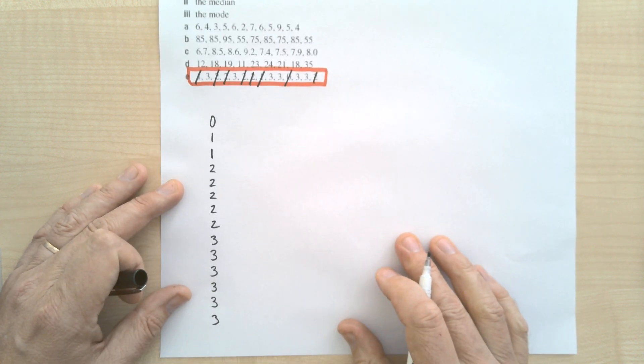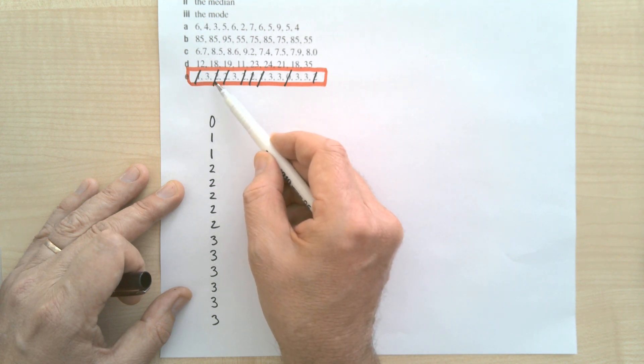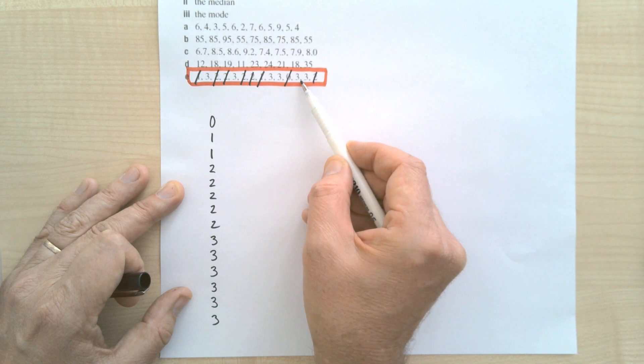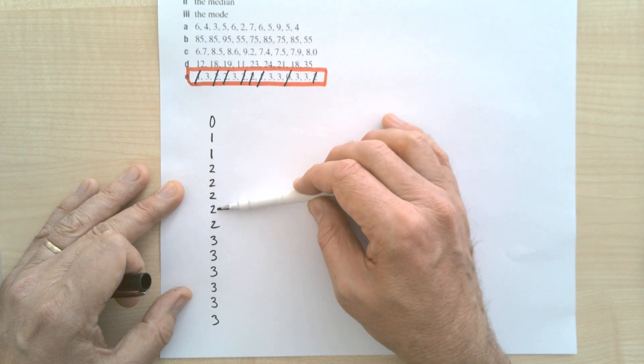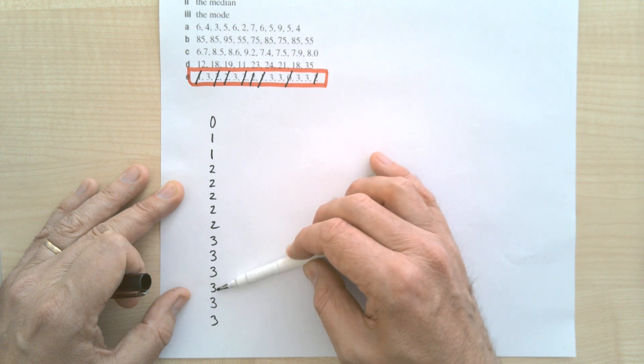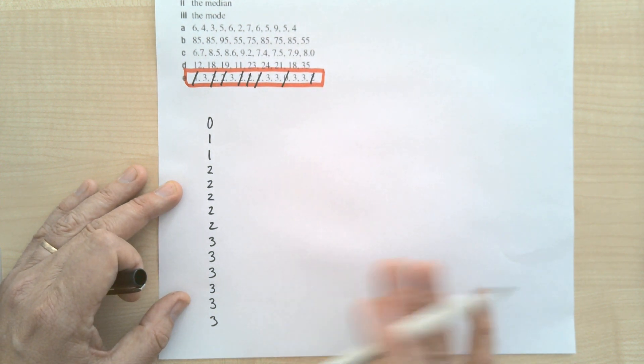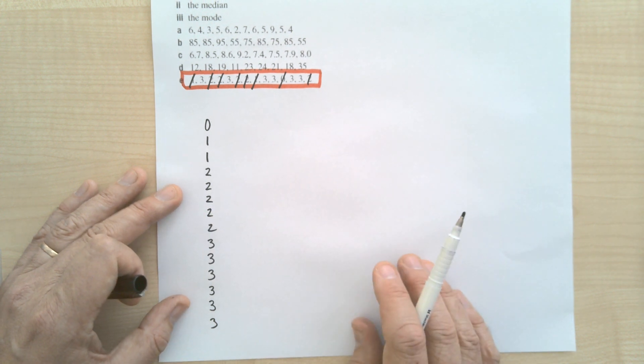Alright, so that's the data written from smallest to biggest. Let's just check for a second. I've got one, two, three, four, five, six, seven, eight, nine, ten, eleven, twelve, thirteen, fourteen numbers. It's good to just check that because it's a bit of a mongrel if you miss out one or add one by mistake.